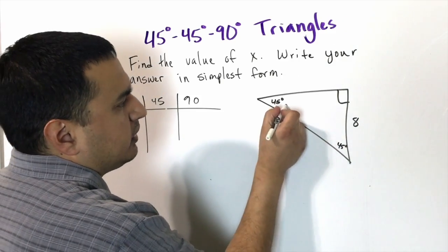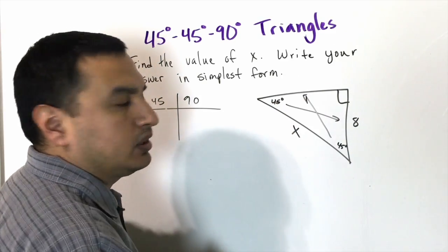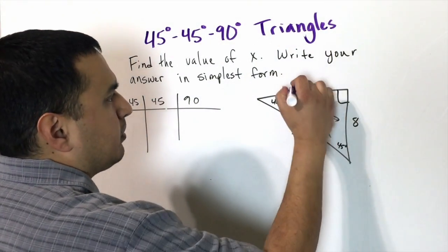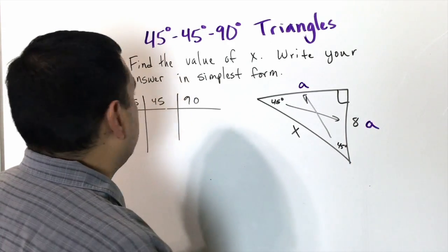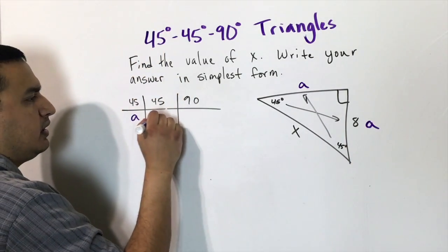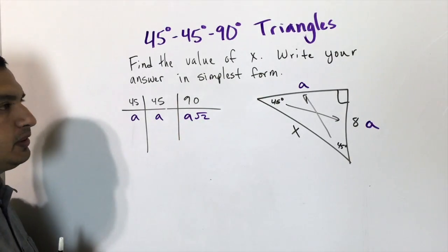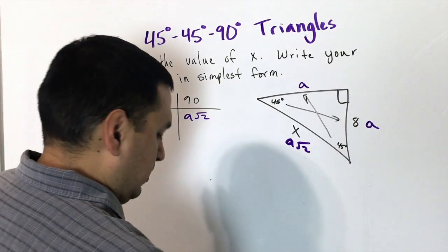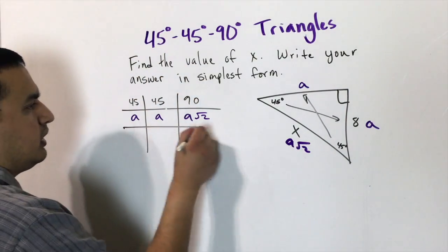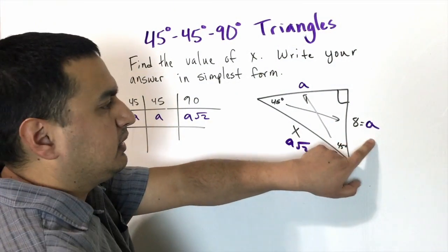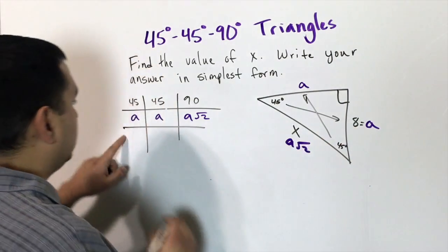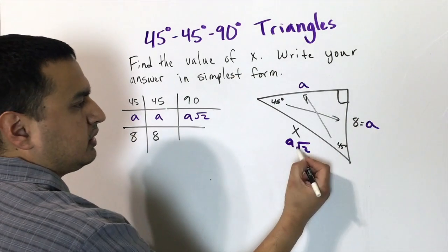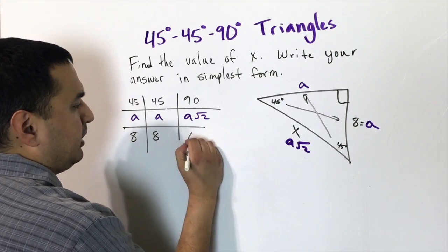The 45° angles are across the two legs, and we assign those the value 'a'. The hypotenuse across the 90° angle is a√2. In this example, the legs are labeled 8, so we substitute 8 in place of 'a'. The hypotenuse is therefore 8√2.